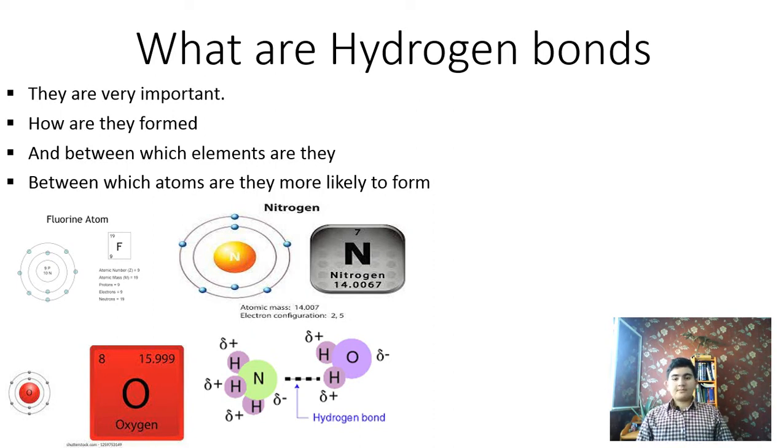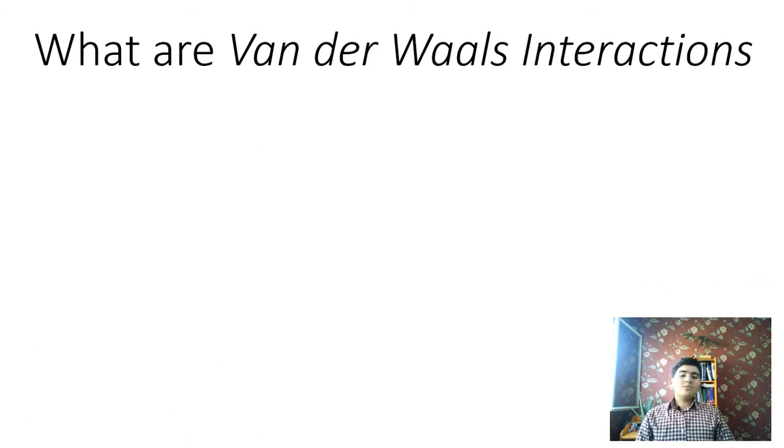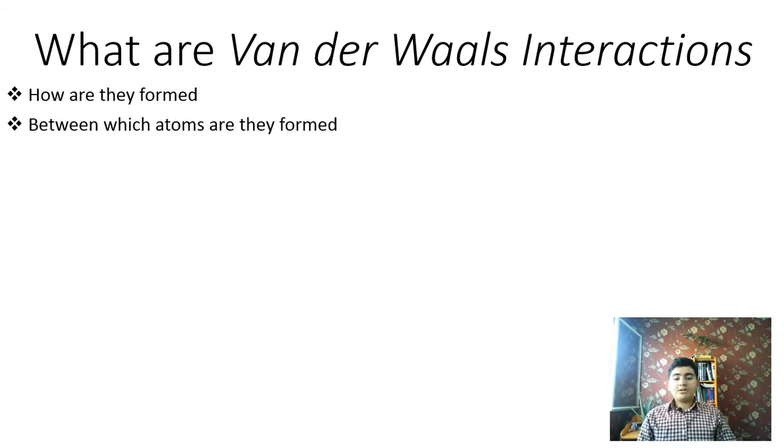Now let's learn about Van der Waals interactions. Even a molecule with non-polar covalent bonds may have positively and negatively charged regions. As you might know, electrons are not always evenly distributed inside the atom. In any instant they may accumulate by chance in one part of a molecule or another. The results are ever-changing regions of positive and negative charge.